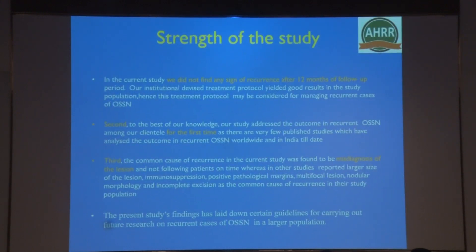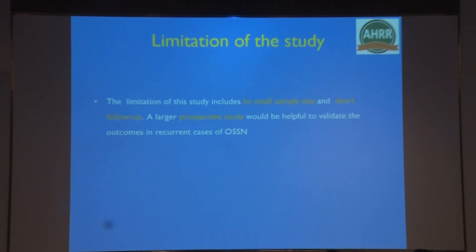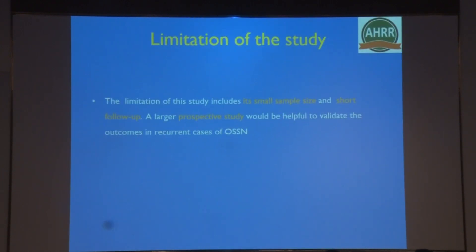This is the first study to analyze outcomes in recurrent cases of OSSN. We did not find any sign of recurrence after 12 months of follow-up, and the common cause of recurrence was found to be misdiagnosis of the lesion. The study has laid down certain guidelines for carrying out research on recurrent cases in a larger population. Limitations were a small sample size and short follow-up.